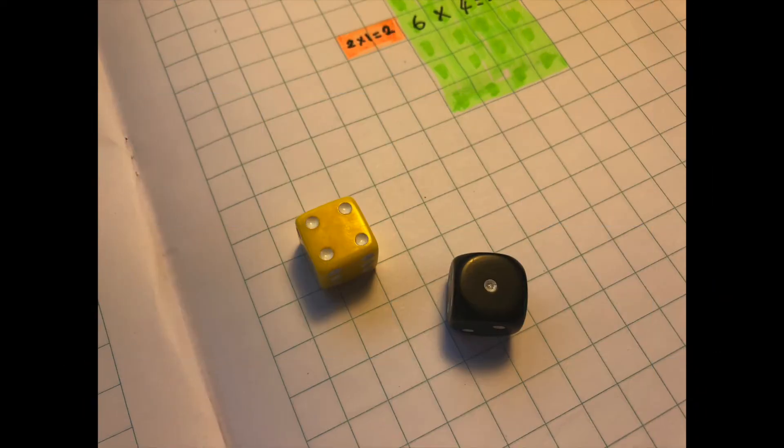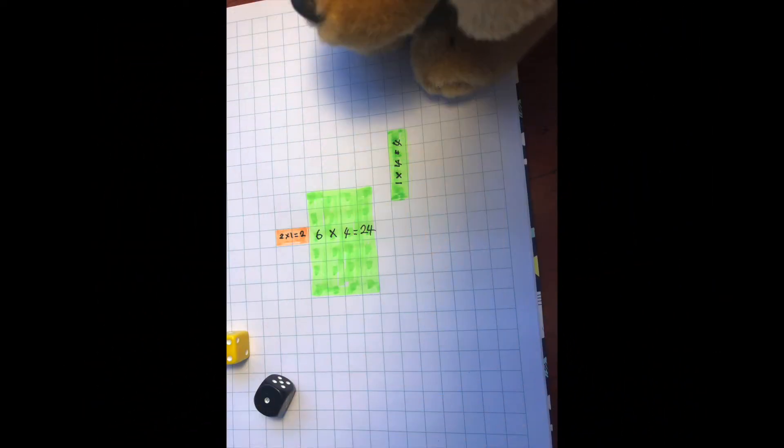And it's four and one. What will this array look like? Four rows and one column.